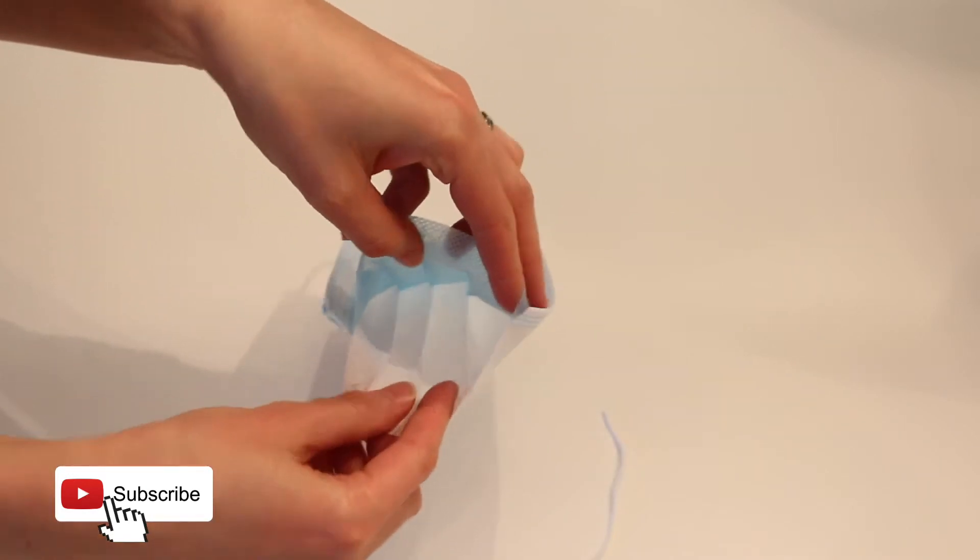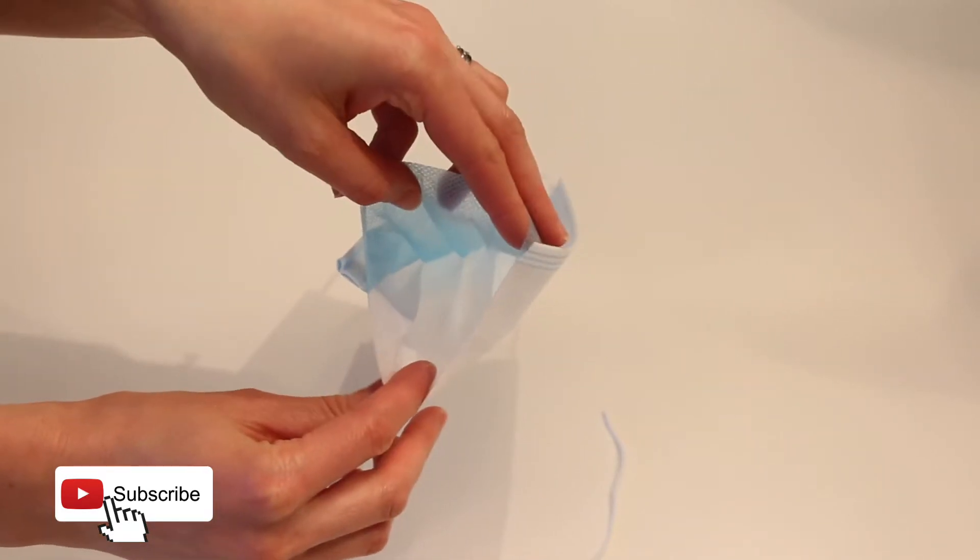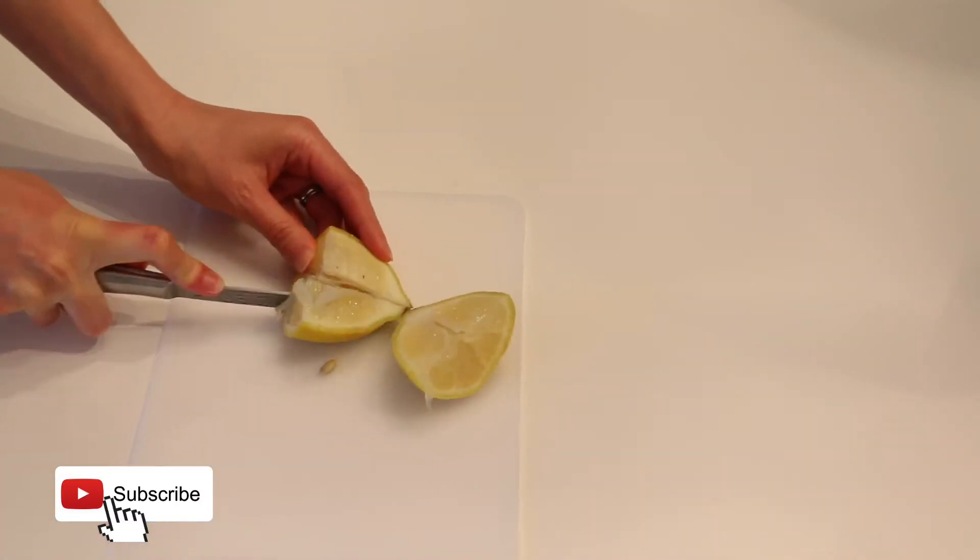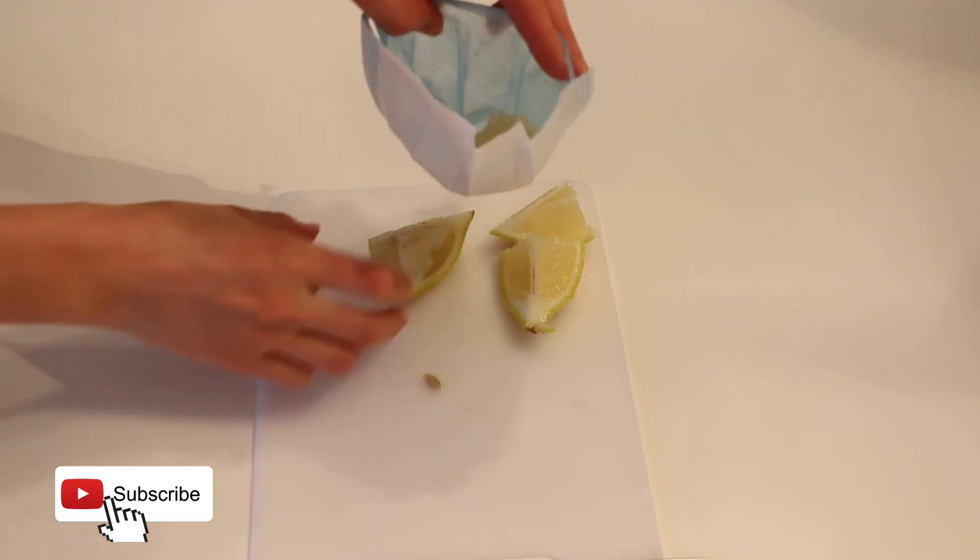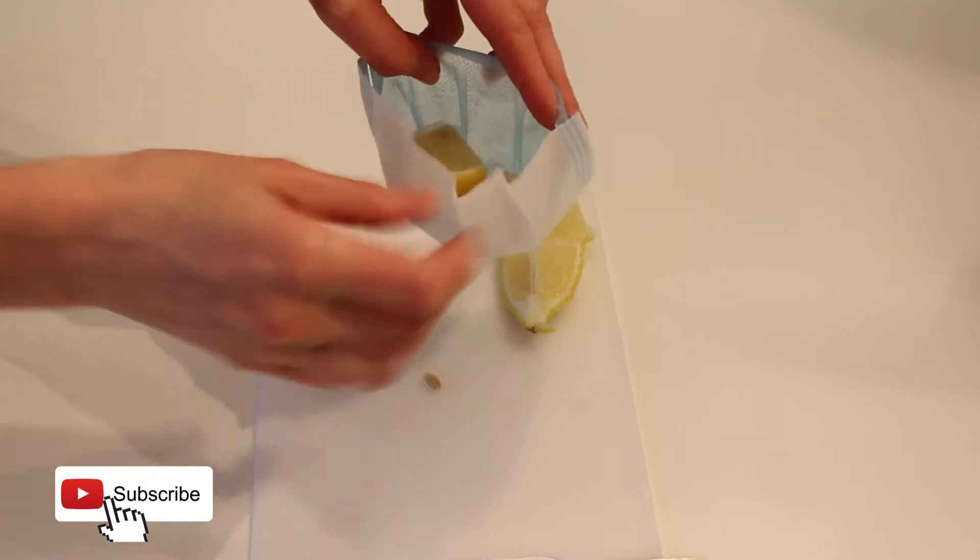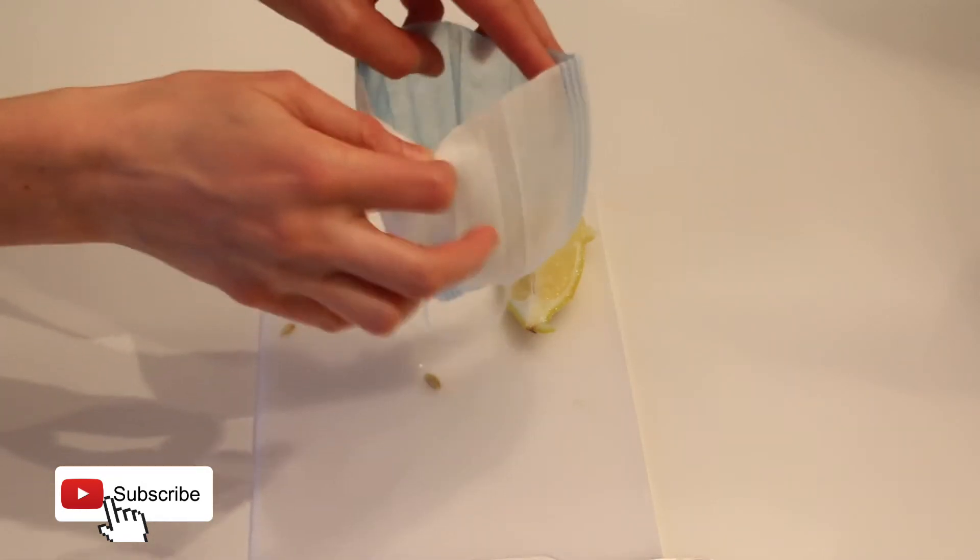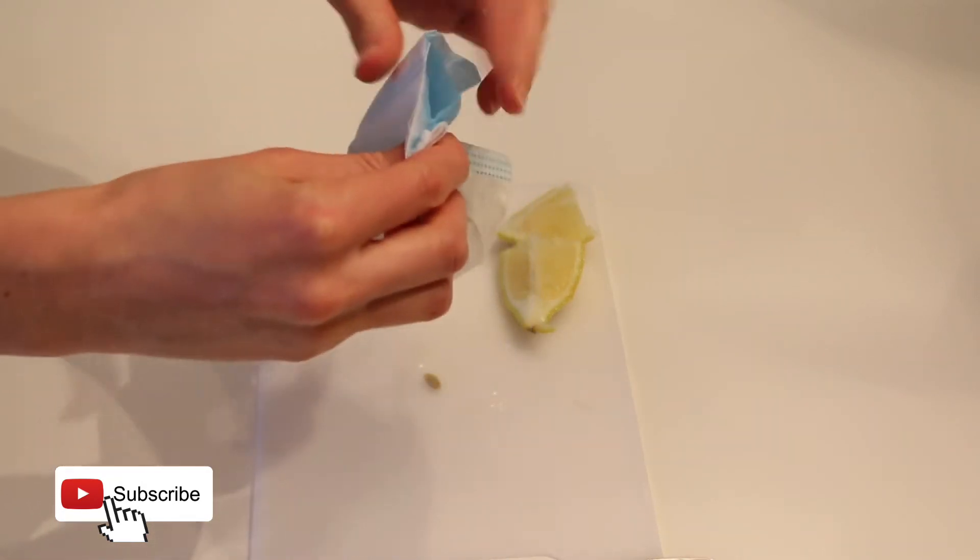You can see that the face mask is going to turn into a little pouch. Grab a lemon and quarter it. Depending on how big your lemon is, fill your face mask pouch with a few pieces of the lemon. Tie off the open end of the mask with the elastic band.